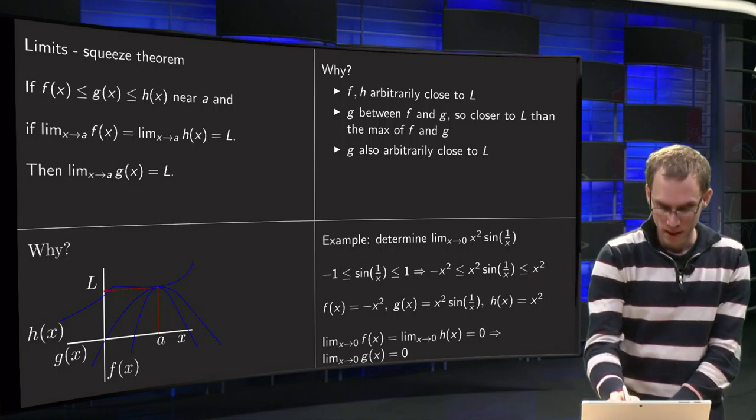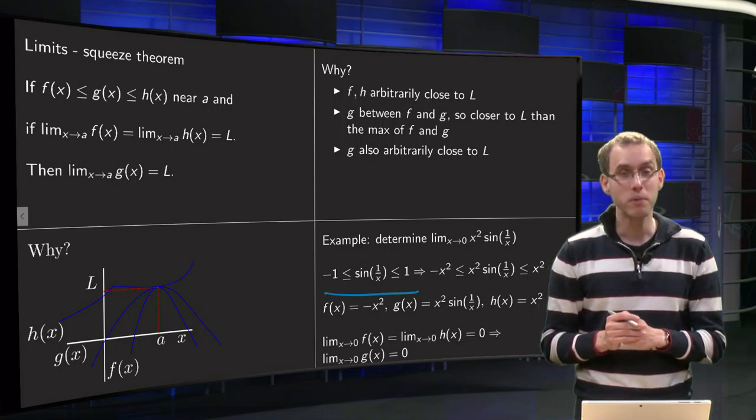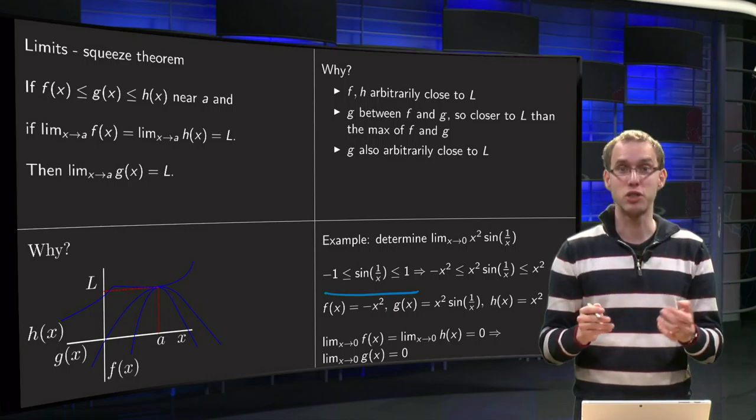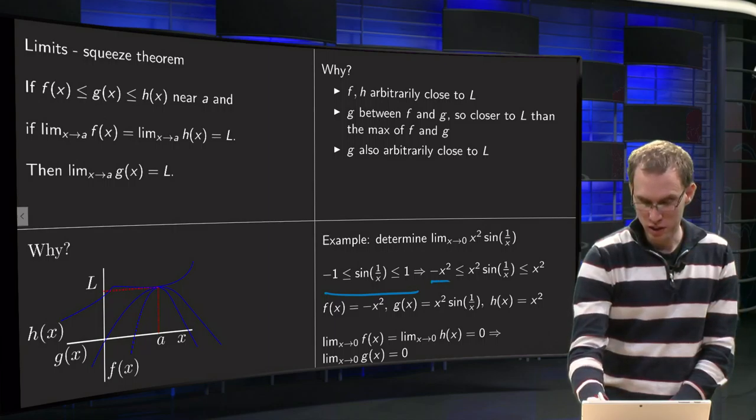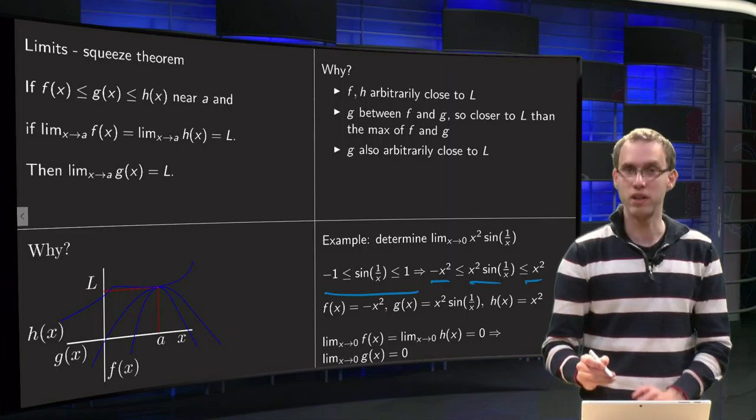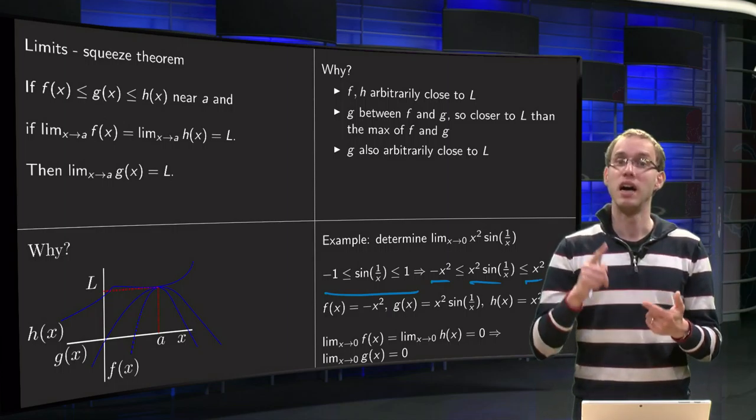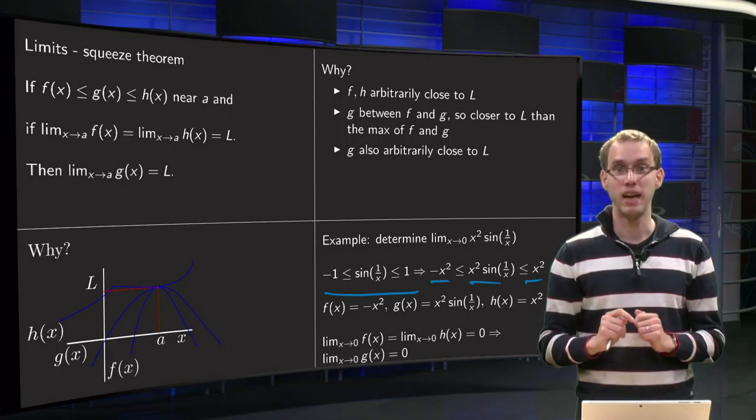So what do we do? We know that any sine of a real number is bounded between -1 and 1, so we know if we multiply with x², which is a positive number, that we have -x² smaller than x² times the sine smaller than x². So our f will be -x², our g will be x²sin(1/x), and our h will be x².